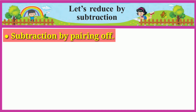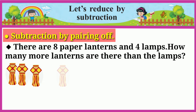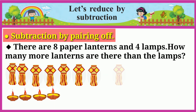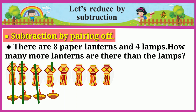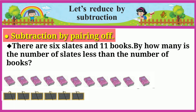Subtraction by pairing: there are eight paper lanterns and four lamps. How many more lanterns are there than lamps? First, we will make them equal — one, two, three, and four. How many lanterns remain? There are four more lanterns than there are lamps.